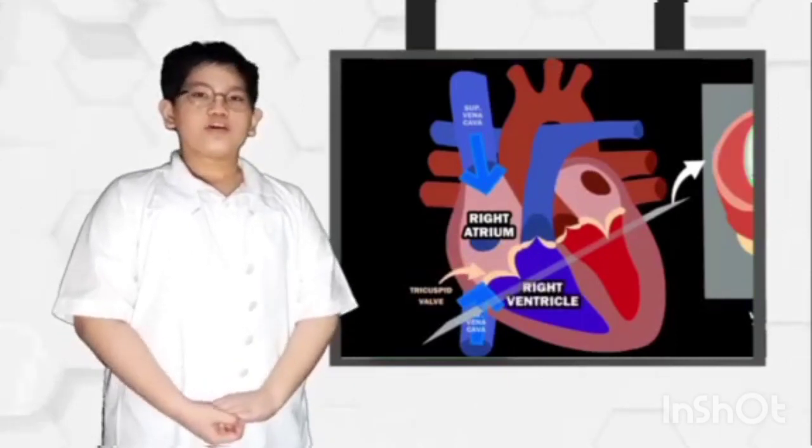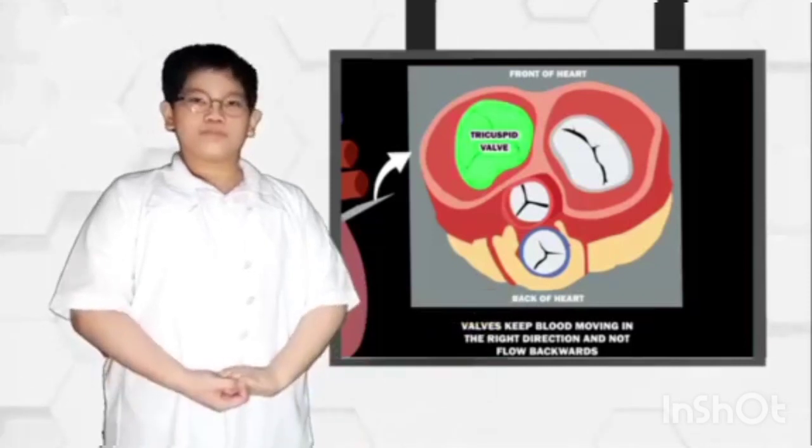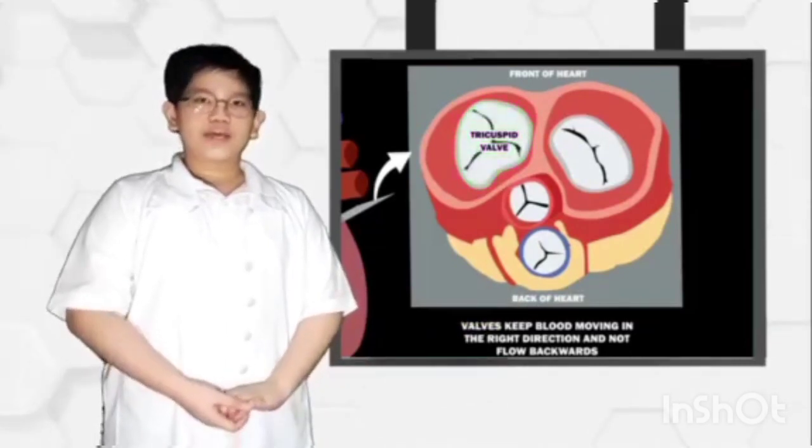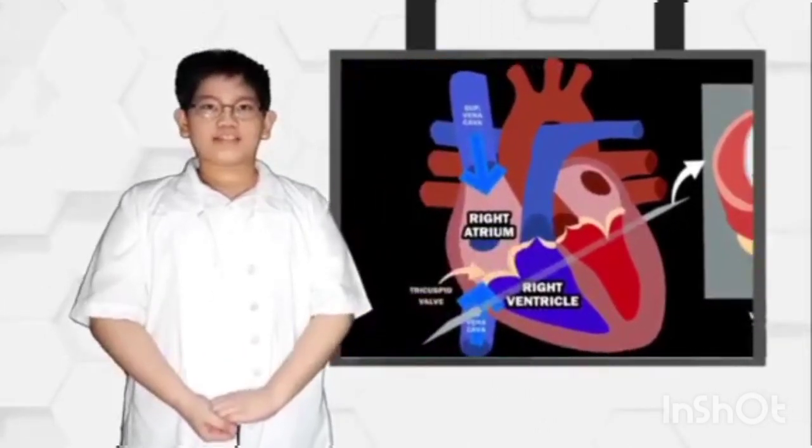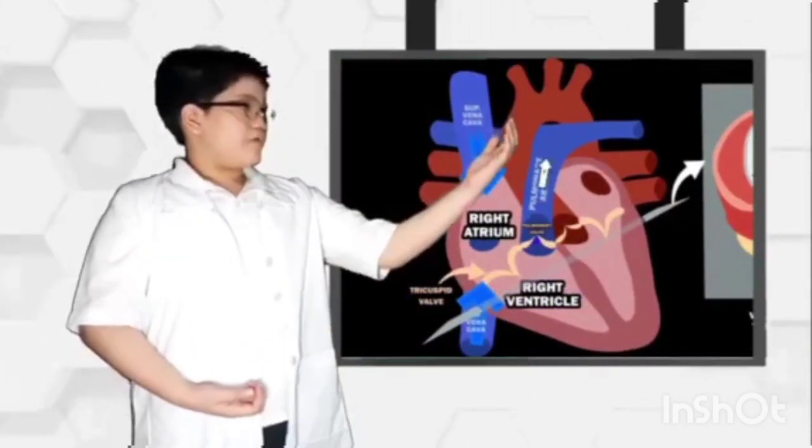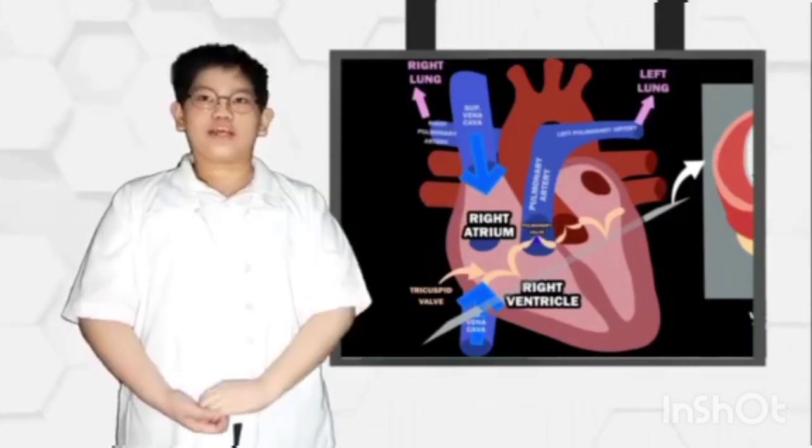When the ventricle is full, the tricuspid valve shuts. This prevents blood flowing backward into the atrium while the ventricle contracts. As the ventricle contracts, blood leaves the heart through the pulmonic valve and into the pulmonary artery and to the lungs where it's oxygenated.